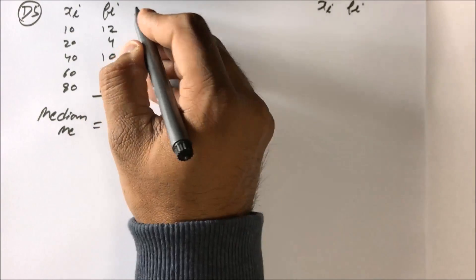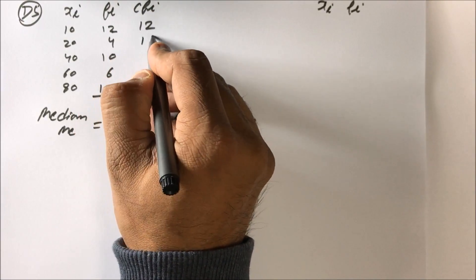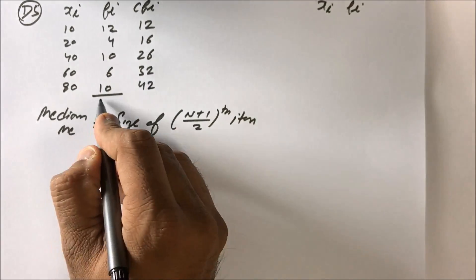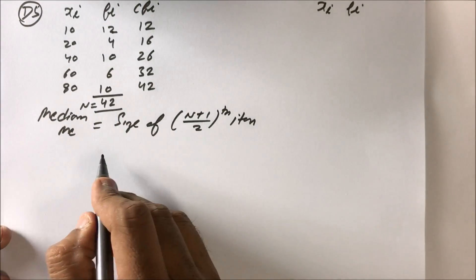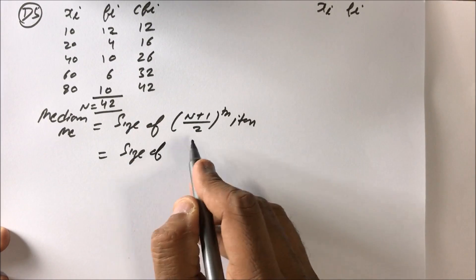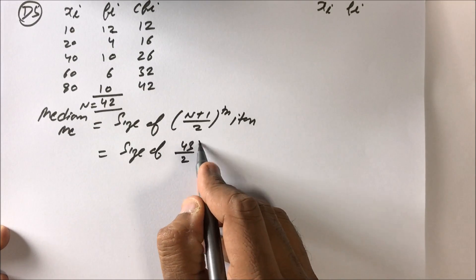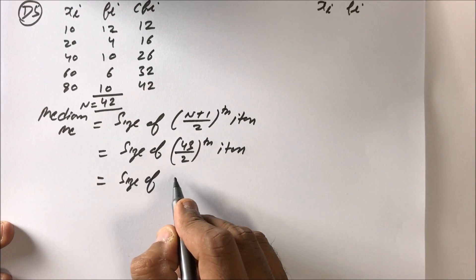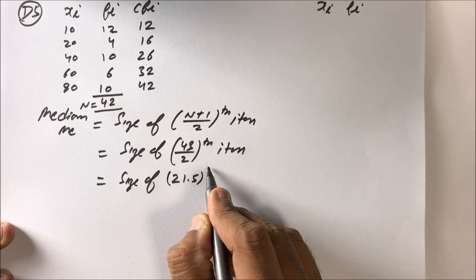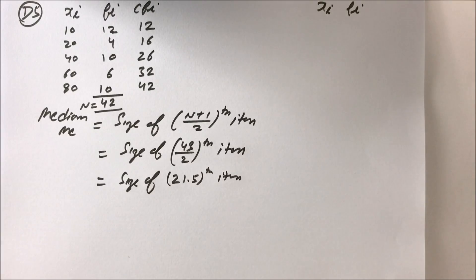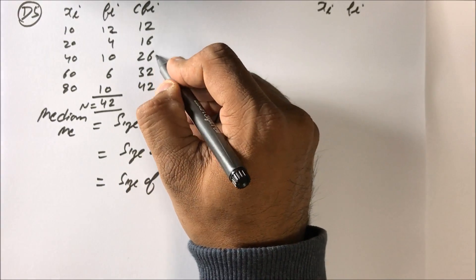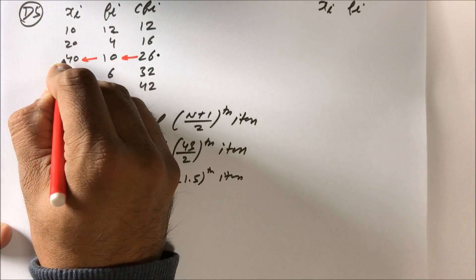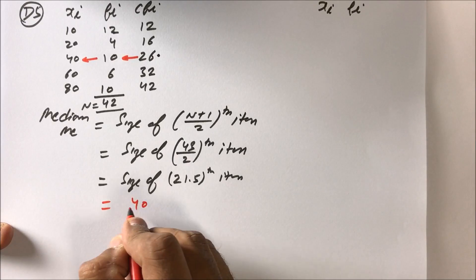We find the cumulative frequency (CF): 12, 12+4=16, 16+10=26, 26+6=32, 32+10=42. So n = 42. We need the (42+1)/2 = 21.5th item. Looking into the CF column, the 21.5th rank falls in the CF value of 26, which corresponds to Xi = 40.